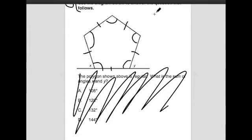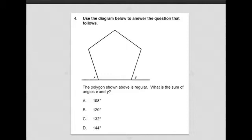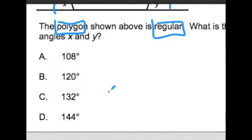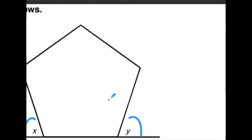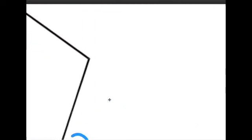They're called regular polygons. If we look a little closer at the question, we actually read the question, which is where we should have started to begin with, but it says the polygon shown above is regular. Then it says, what is the sum of angles x and y, these being x and y? Before we even work with the question, let's just talk about the core concept of what is a polygon, and what exactly does it mean to be regular?